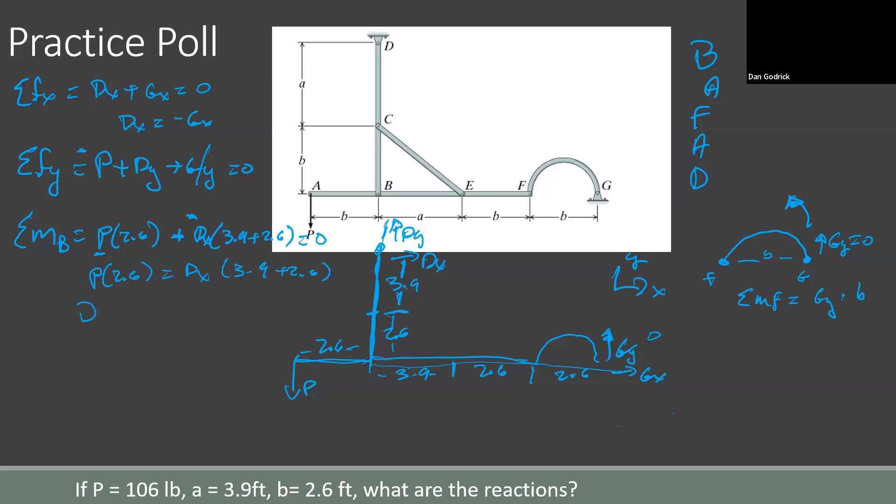We know gy is 0. And we know gx is also equal to, or the moment due to gx is also equal to 0 because it goes right through b. So we know p plus minus, so dx, its influence, its moment about point b is negative, times its perpendicular distance, which is 3.9 plus 2.6. That is equal to 0. So p times 2.6 is equal to dx times 3.9 plus 2.6. So dx is equal to p times 2.6 divided by 3.9 plus 2.6. And we know p is 106 pounds because it's given to us. So dx is 42.4 pounds, not newtons, pounds. So we know dx is equal to minus gx. Therefore, gx is equal to minus 42.4 pounds. And we actually know from some of the forces in the y direction, minus p plus dy is equal to 0. So dy is equal to 106 pounds.